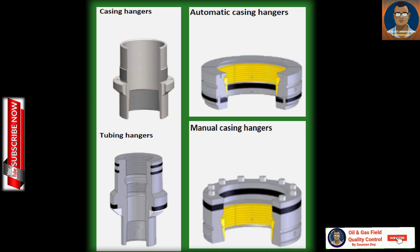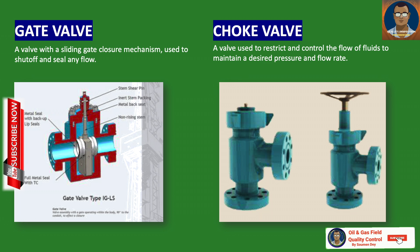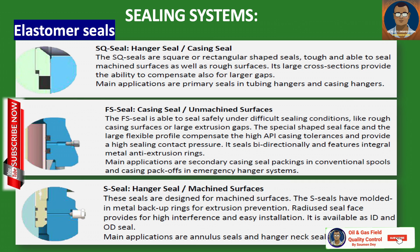Two types of valves are used in wellheads and christmas trees: first, the gate valve — a valve with a sliding gate closure mechanism used to shut off and seal any flow. Second, the choke valve — a valve used to restrict and control the flow of fluid, maintain a desired pressure and flow rate.